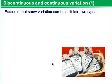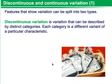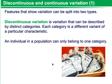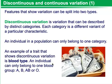Discontinuous and continuous variation. Features that show variation can be split into two types. Discontinuous variation is variation that can be described by distinct categories. Each category is a different variant of a particular characteristic, and an individual in a population can only belong to one category. An example is blood type — an individual can only belong to one blood group: A, B, AB, or O.